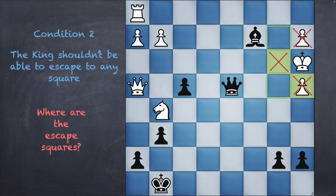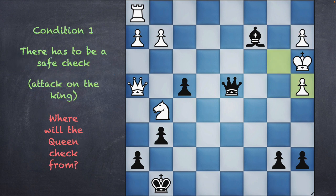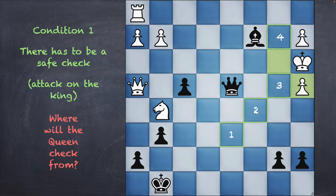Now you've broken down the second part of the problem: where would the king escape to. Going back, we realize the queen is going to give the check — but how? The queen can give a check diagonally. To give a check you need a line of attack, and the king right now has three lines of attack. The queen could come to position one, two, or three, or go to the other side for a diagonal check at four, five, six, or seven.